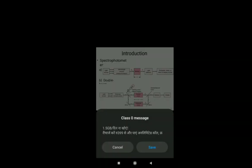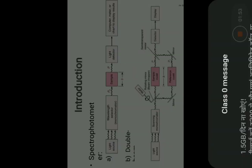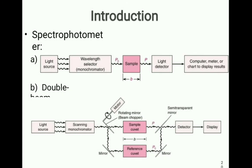In the case of double beam spectrophotometer, the difference lies in that two beams of light are generated. That means, at the same time, we can measure the absorbance of our sample and the reference.